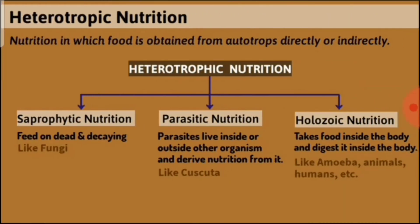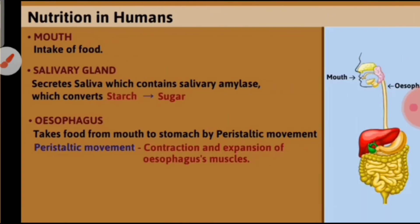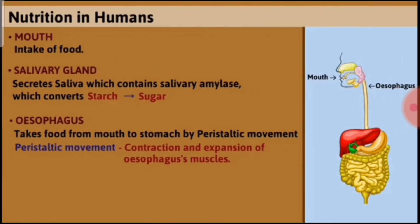In heterotrophic nutrition, organisms obtain food from autotrophs directly or indirectly. It has three types: saprophytic nutrition, where organisms feed on dead and decaying substances; parasitic nutrition, where they live inside or outside another organism and derive nutrition from it; and holozoic nutrition, where they take food inside the body and digest it internally. We humans belong to holozoic nutrition.